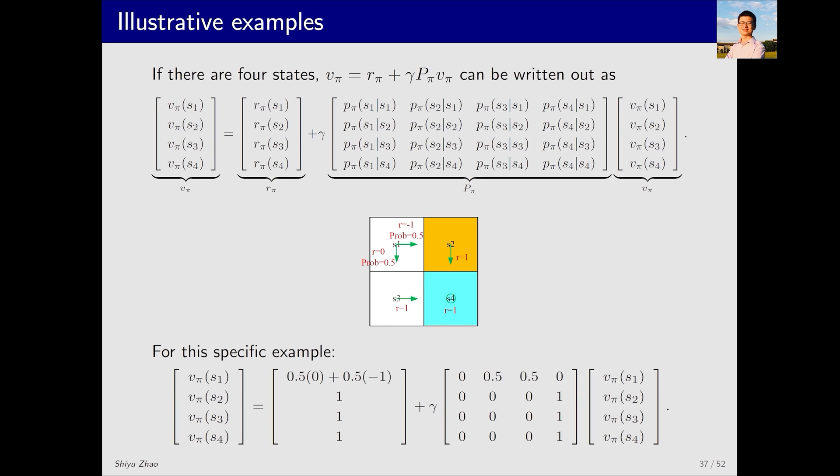Next, let's examine another slightly more complex example. Here, there's a possibility of moving to the right and also a possibility of moving downward. The focus is on how to write out r_π and P_π. Looking at the first element of r_π, starting from s1, what is the immediate reward? It's a combination of a 0.5 probability of moving right, resulting in –1, plus a 0.5 probability of moving down, which is 0. This is the average immediate reward obtained from starting at s1.